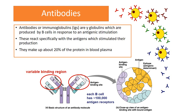Antibodies secreted by B cells on antigenic stimulation are immunoglobulins or gamma globulins, designated as Ig. They react specifically with the antigens which stimulated their production and make up around 20% of the protein in blood plasma.